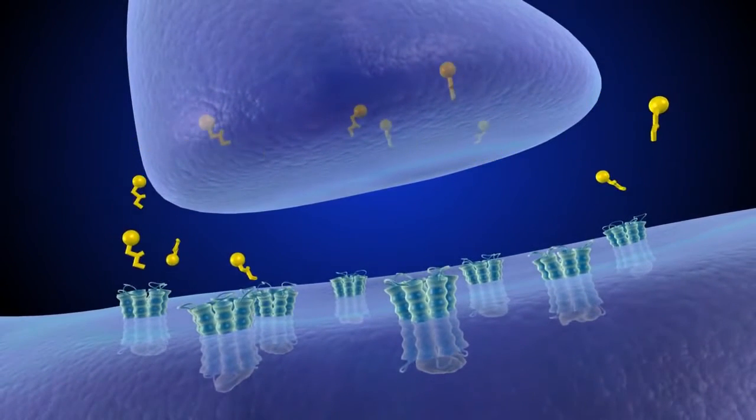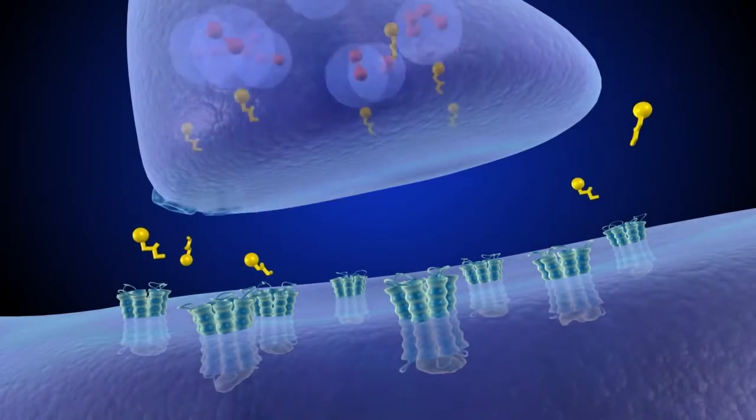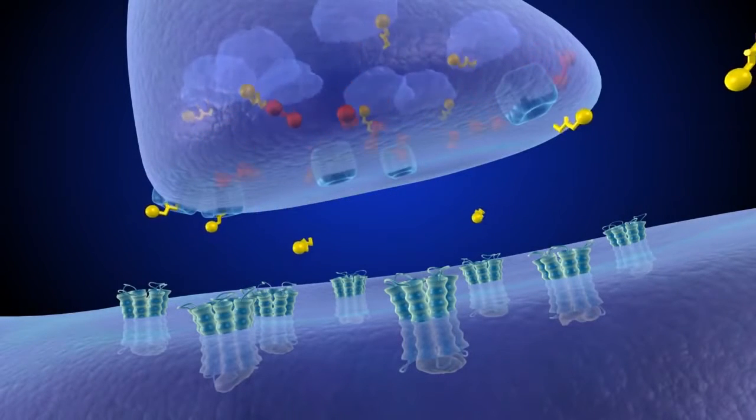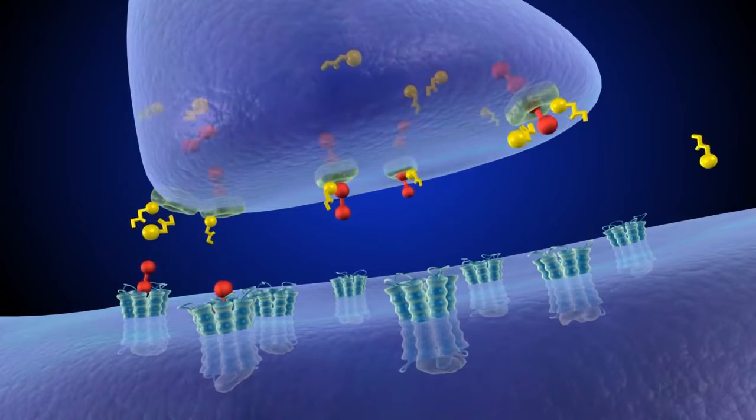When someone first uses methamphetamine, the drug quickly enters the brain. At low doses, meth blocks the re-entry of dopamine into the presynaptic cell, just like cocaine does.